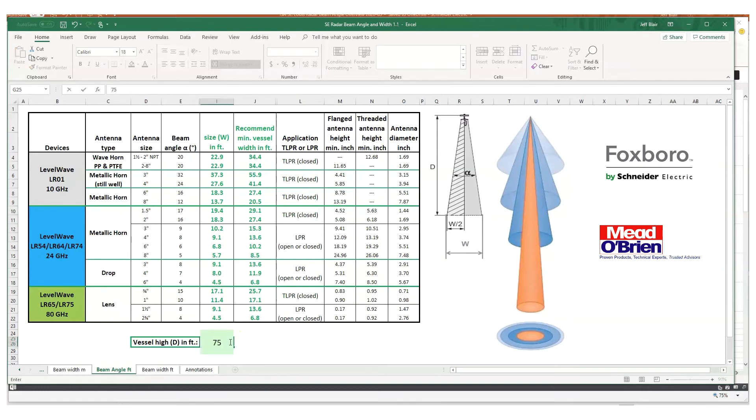So let's go with the 75 feet down here and you can see different variations as to how big that beam will actually be. Beam size width in feet from two inch NPT antenna, 26.4 feet wide to the 24 gigahertz six inch drop antenna 5.2. And, you know, a little over five feet for a two and three quarter inch lens antenna from an 80 gigahertz radar.